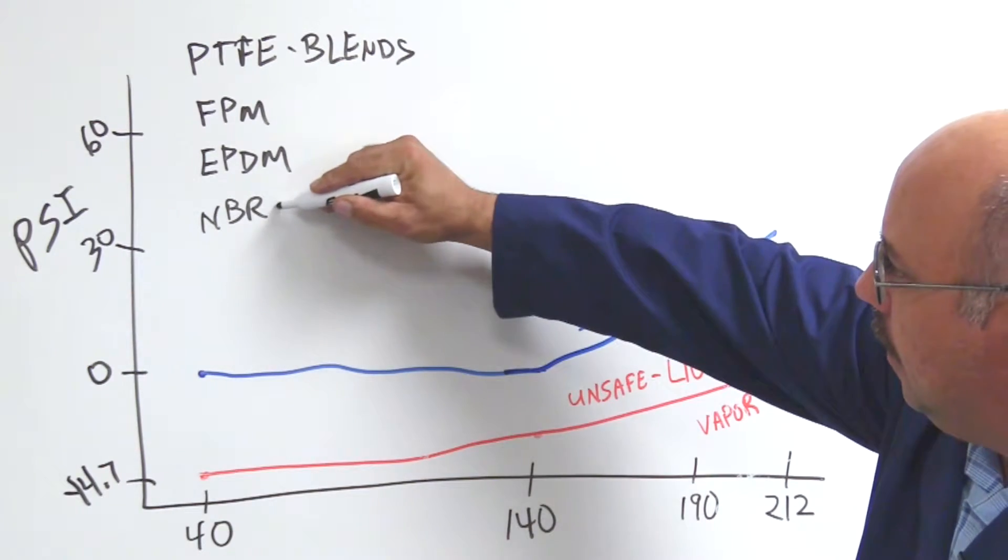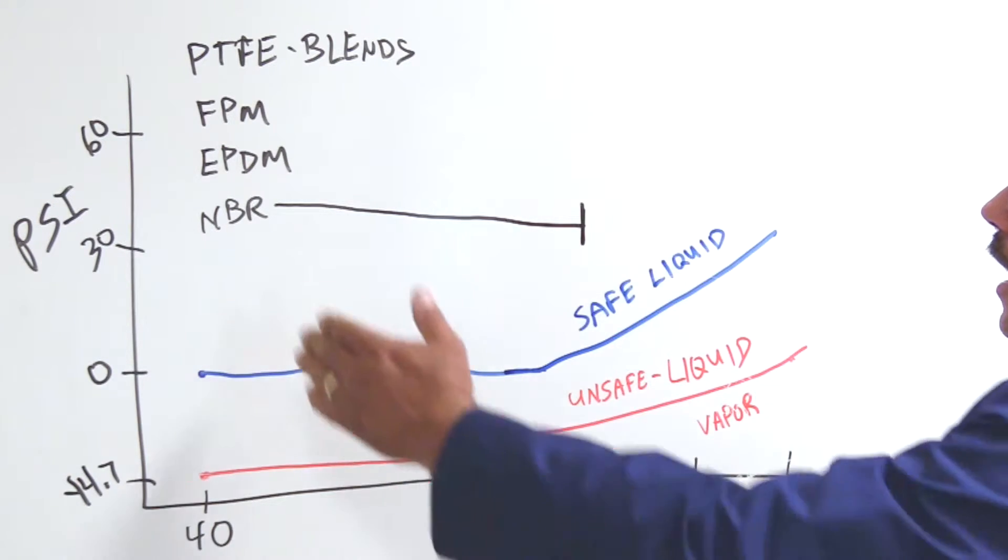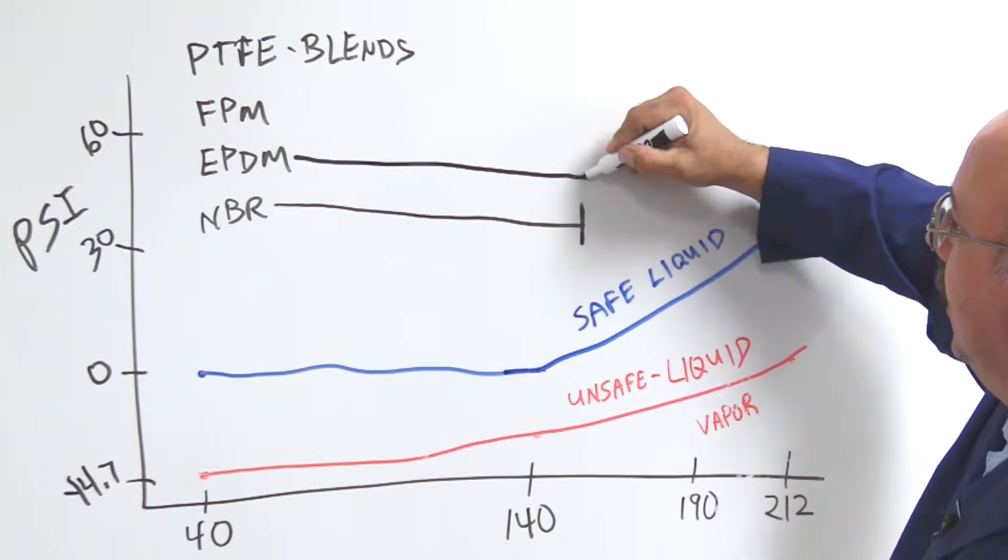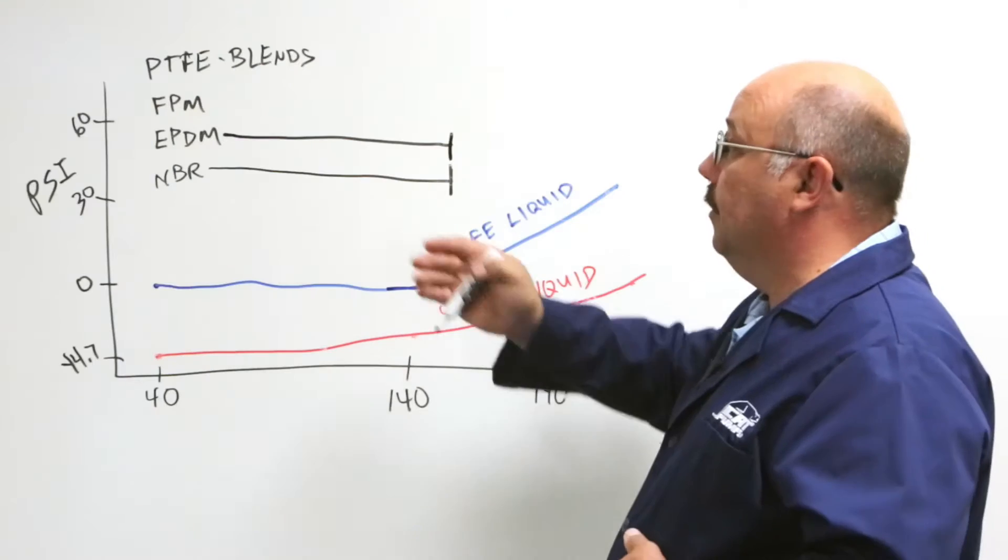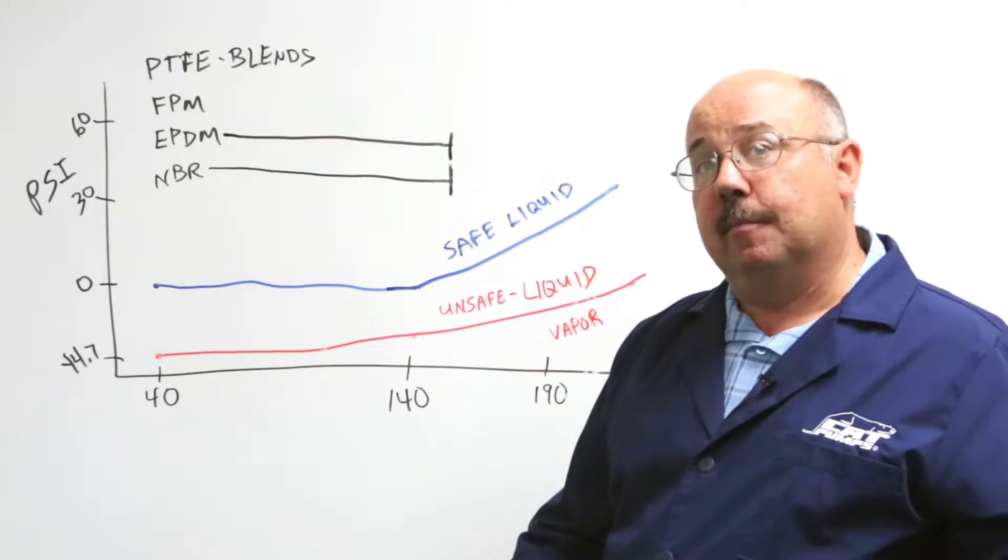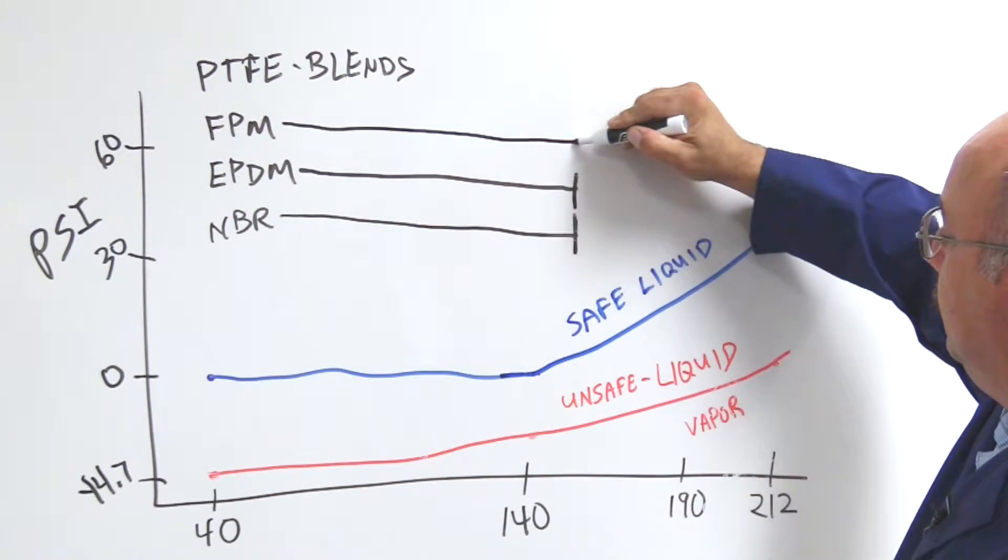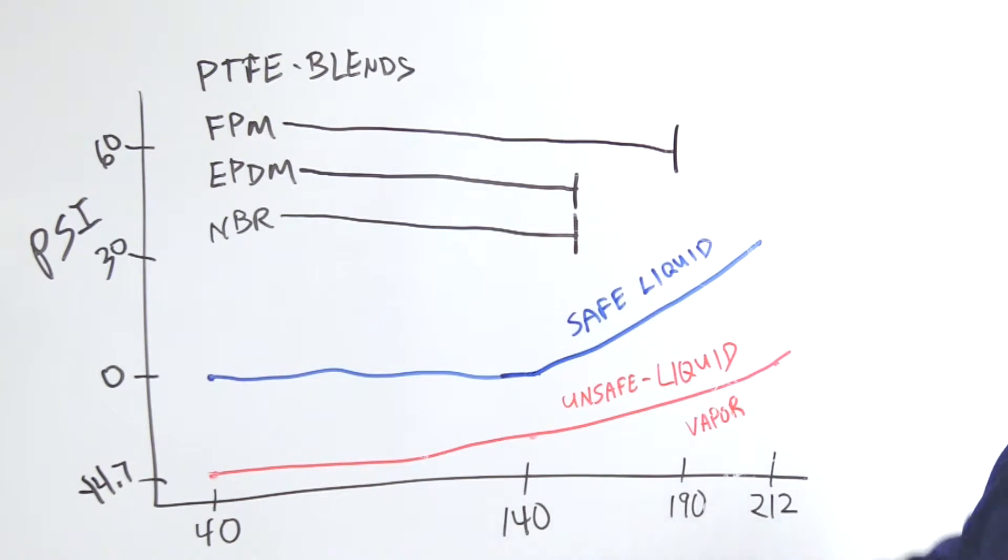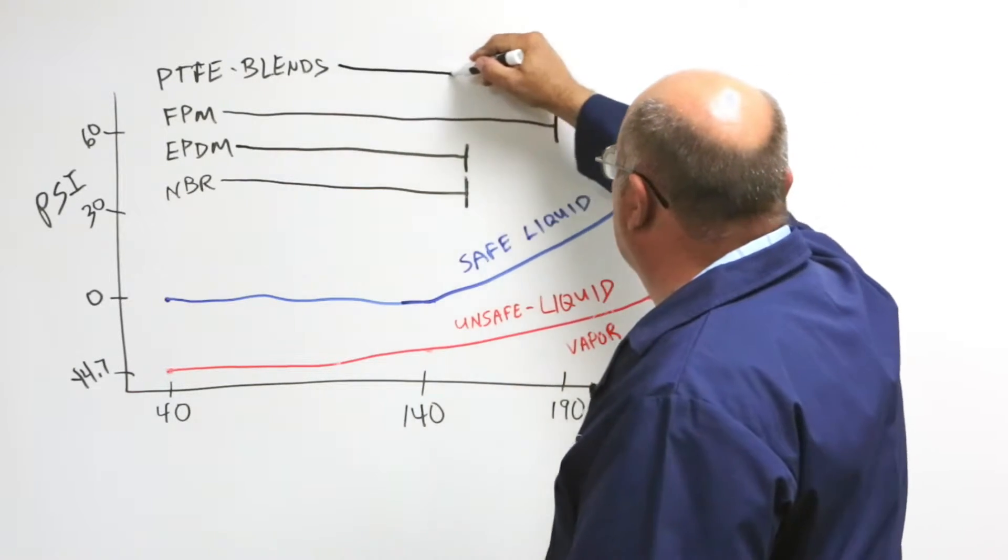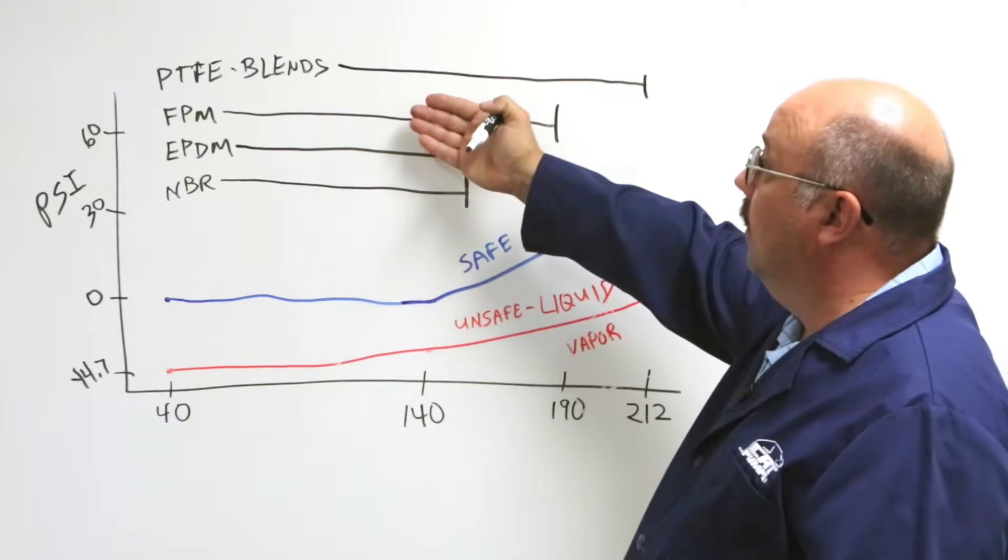Well with BUNA or NBR typically we can run 140, 150, 160. So about right here is where we stop using the BUNA because of temperature. The EPDM follows basically the same limitations. Now EPDM and NBR are two totally different materials and they're used depending on which liquid you're pumping, what's the best chemical compatibility for it. VITON is another compound, elastomeric compound, that'll take us up around the 190 range. And that's where that's good for. And so we have that possibility. And then the PTFE blends easily can handle temperatures up to 212.